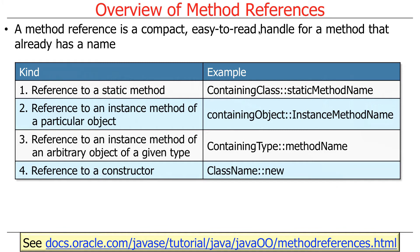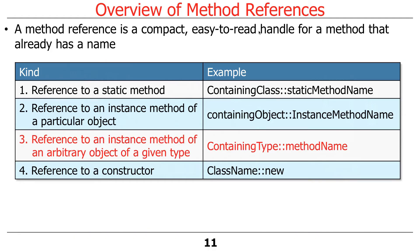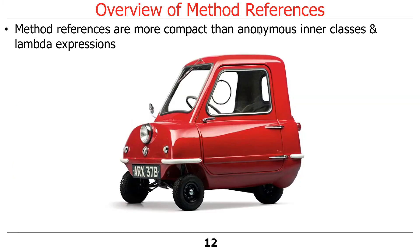Lambda expressions are really concise, but in some situations you could be even more concise. This is called a method reference — an even more compact, even easier to read handle or name for a method that already has an existing name. There are different types: a reference to a static method, a reference to an instance method of a particular object, a reference to a constructor, a reference to an instance method of an arbitrary object of a given type, and so on.